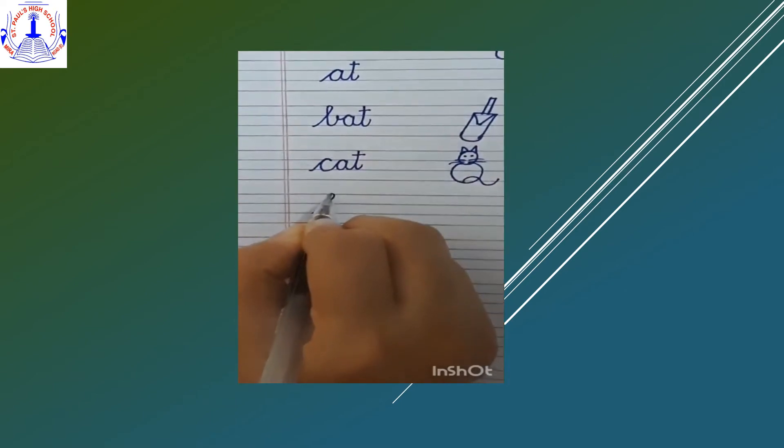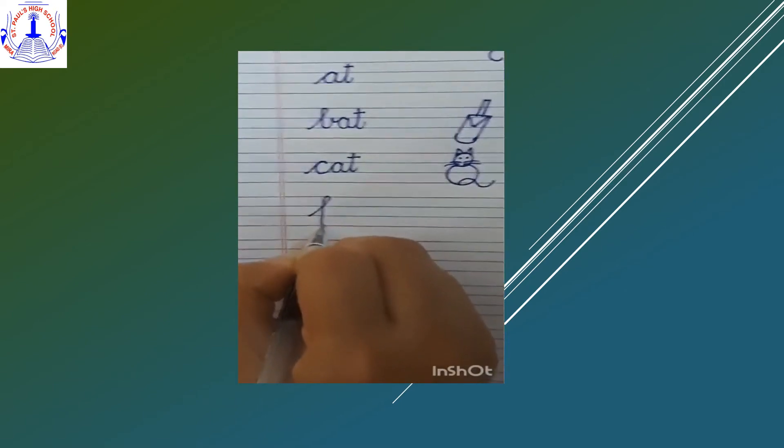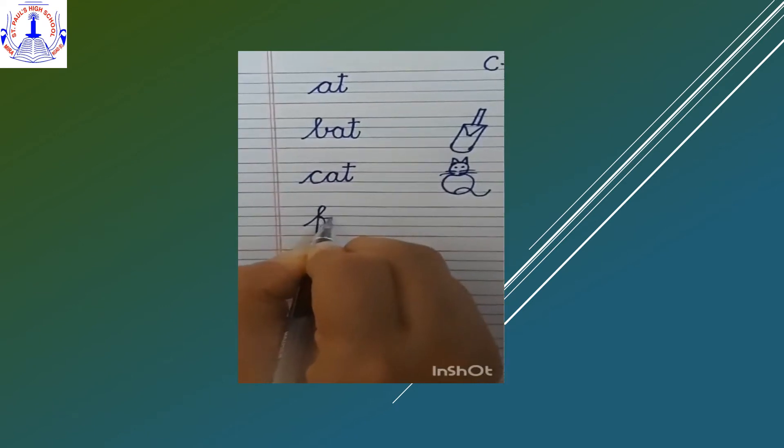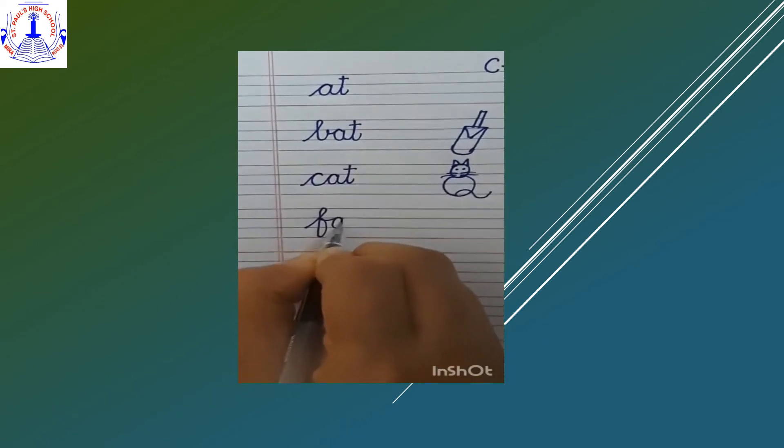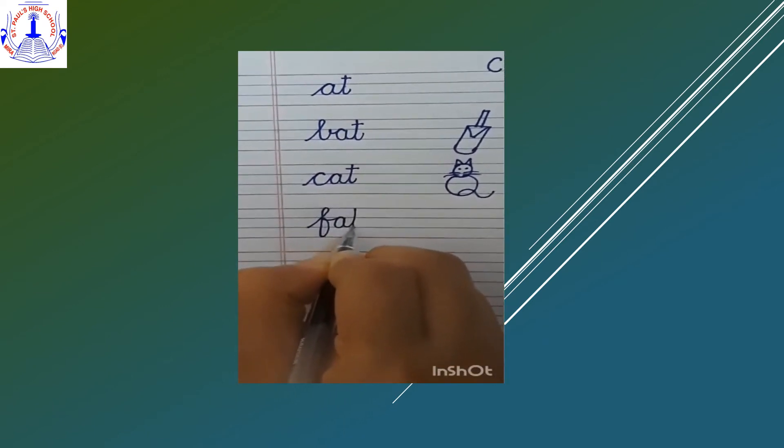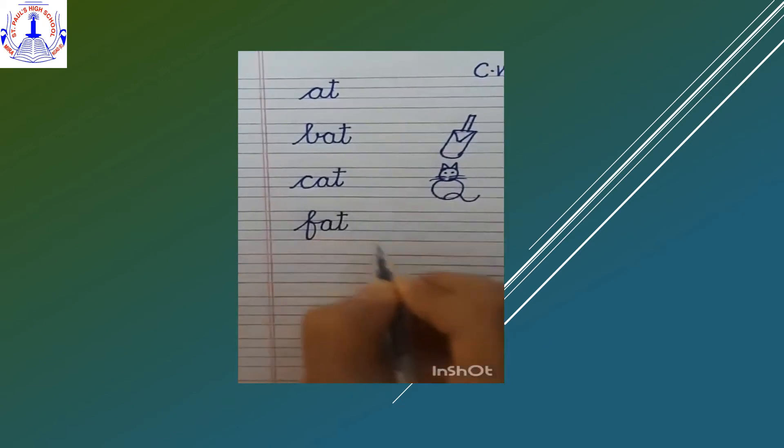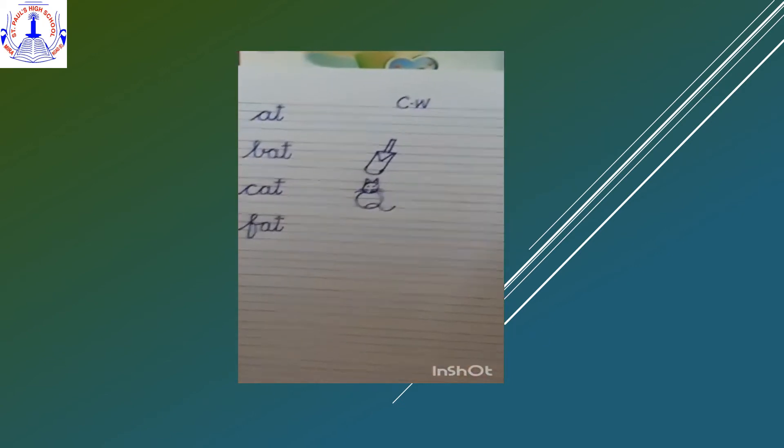Our next word is F-A-T, fat. Small cursive F joining with A joining with T. F-A-T, fat.